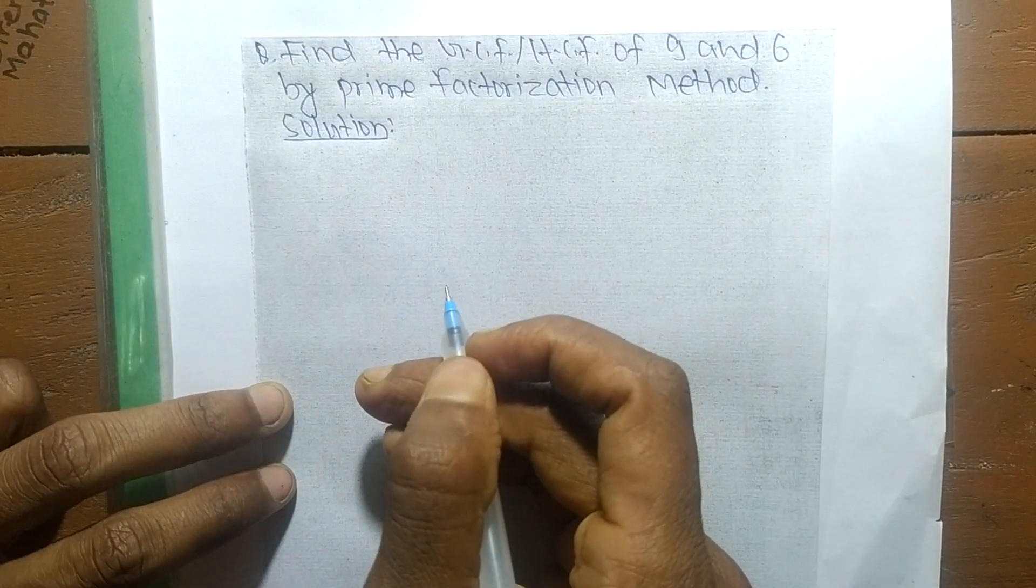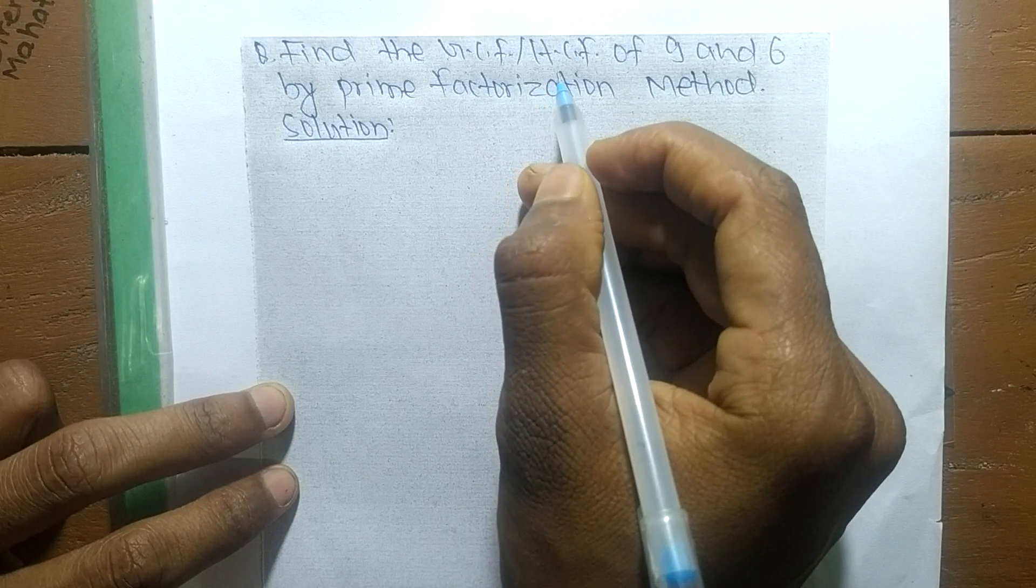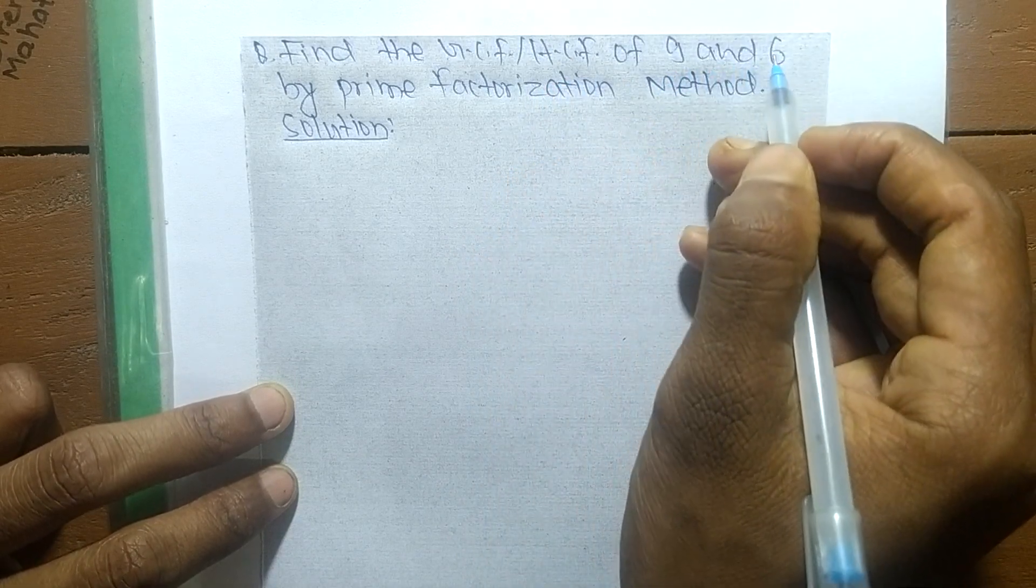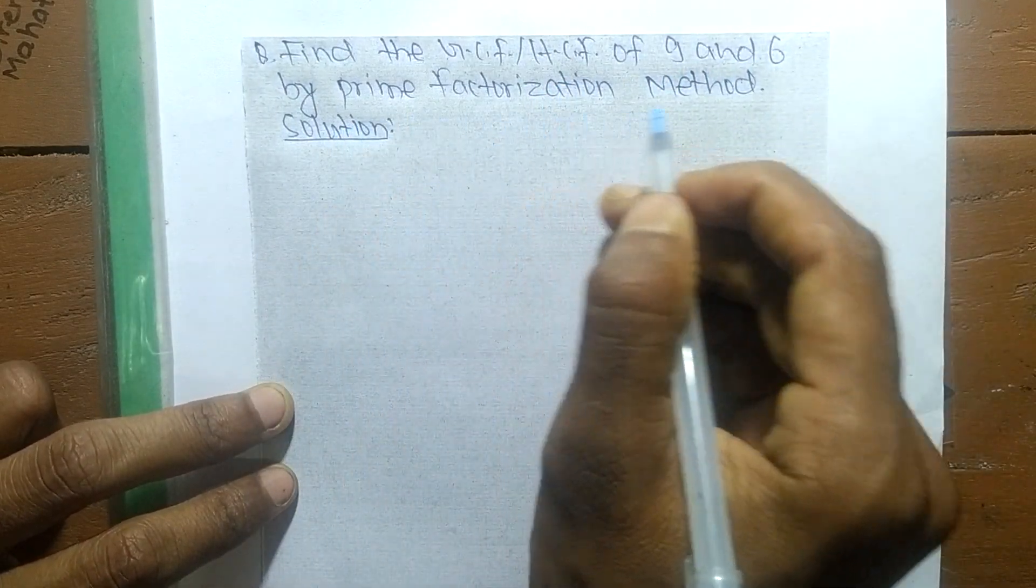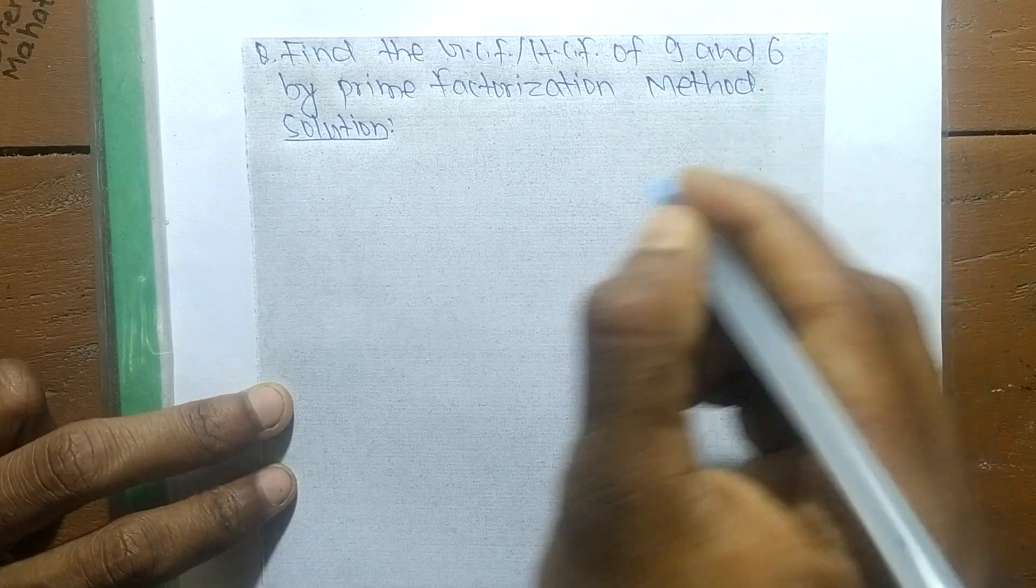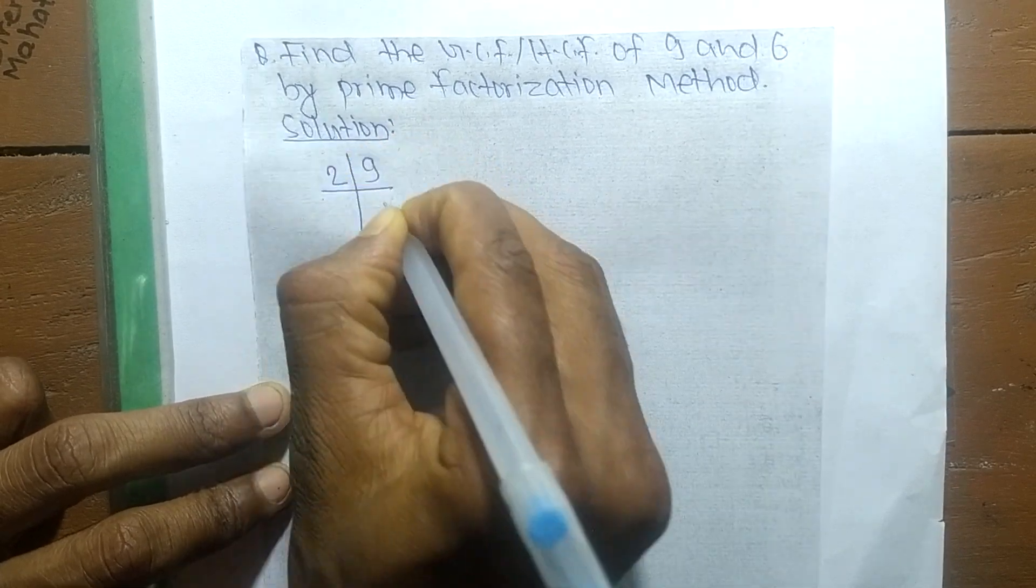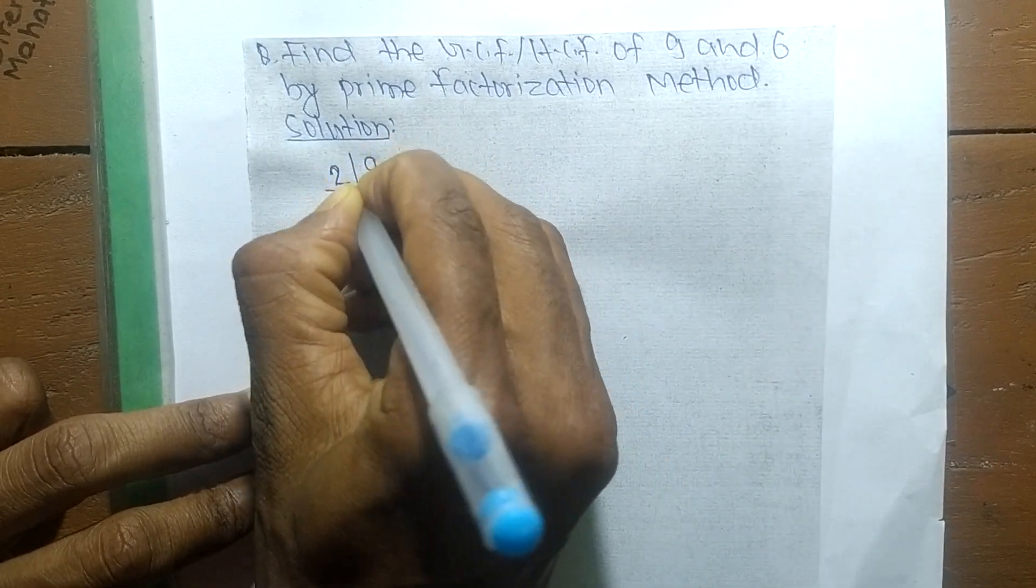Today in this video we will learn to find the GCF or HCF of 9 and 6 by prime factorization method. First, we find the prime factors of 9. It is 3 times 3.